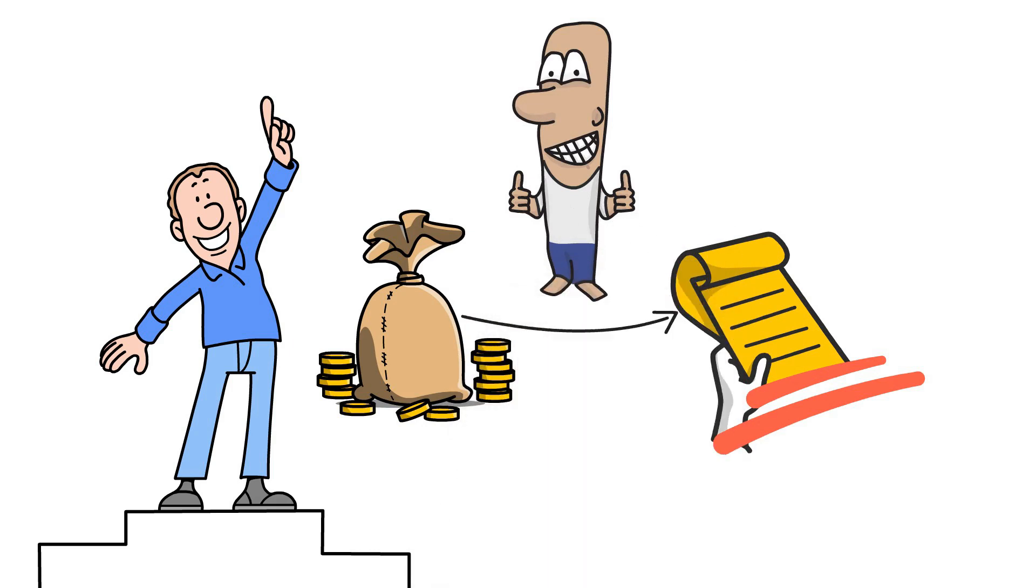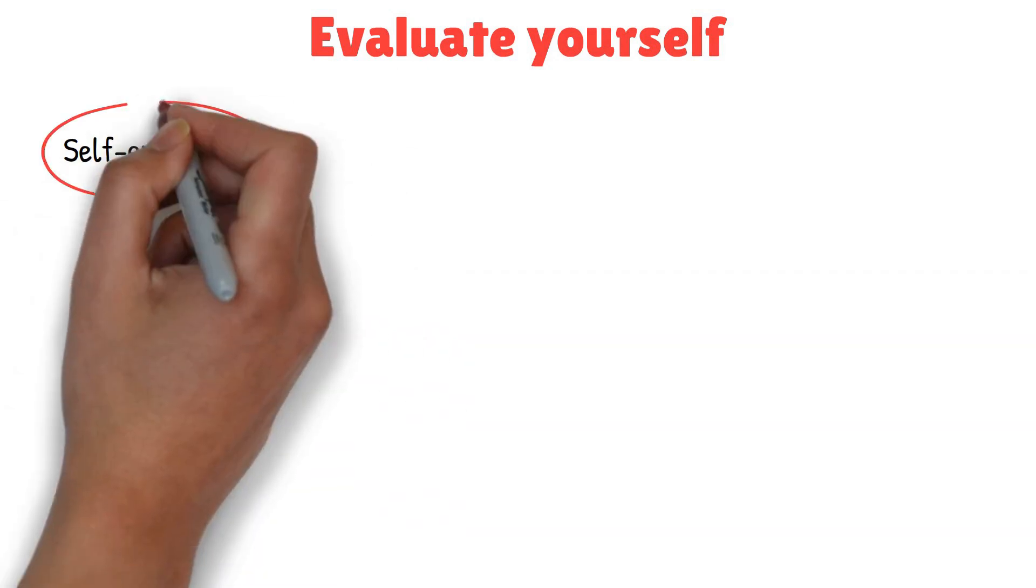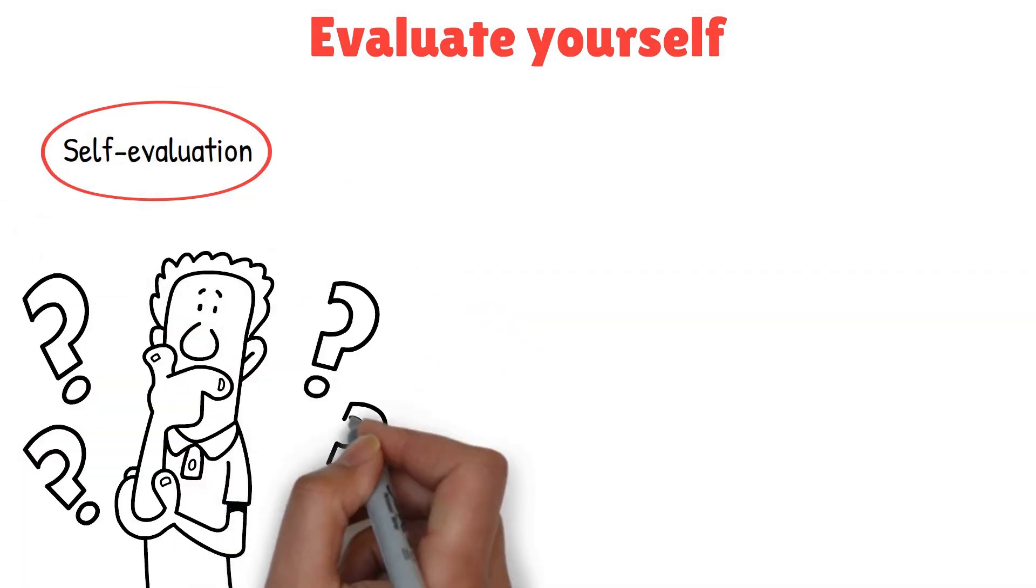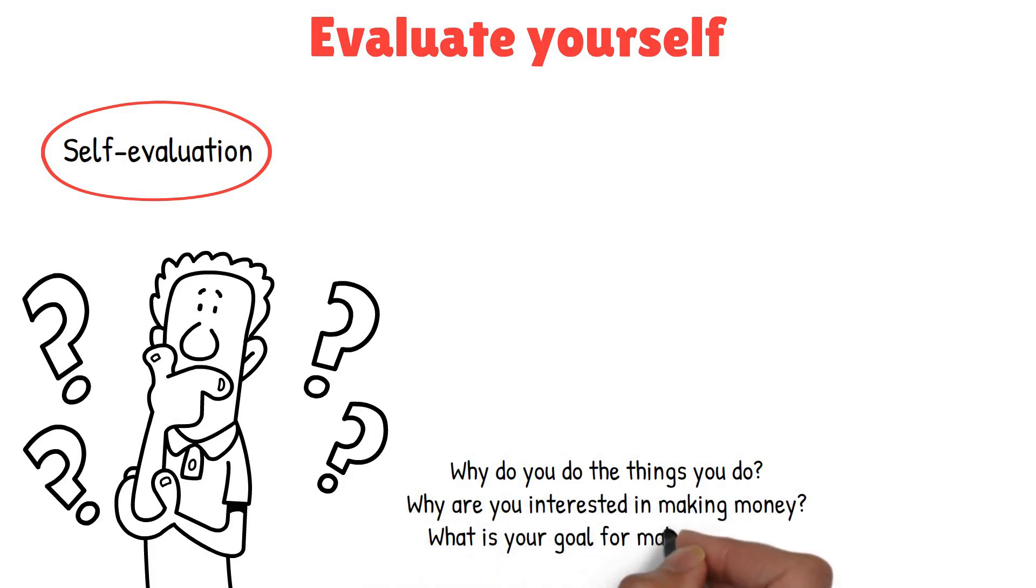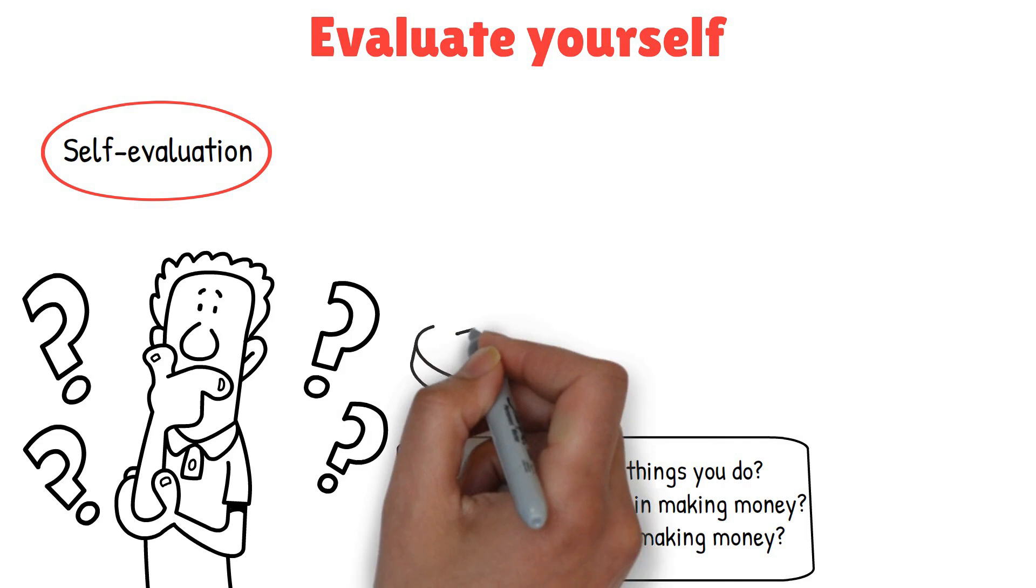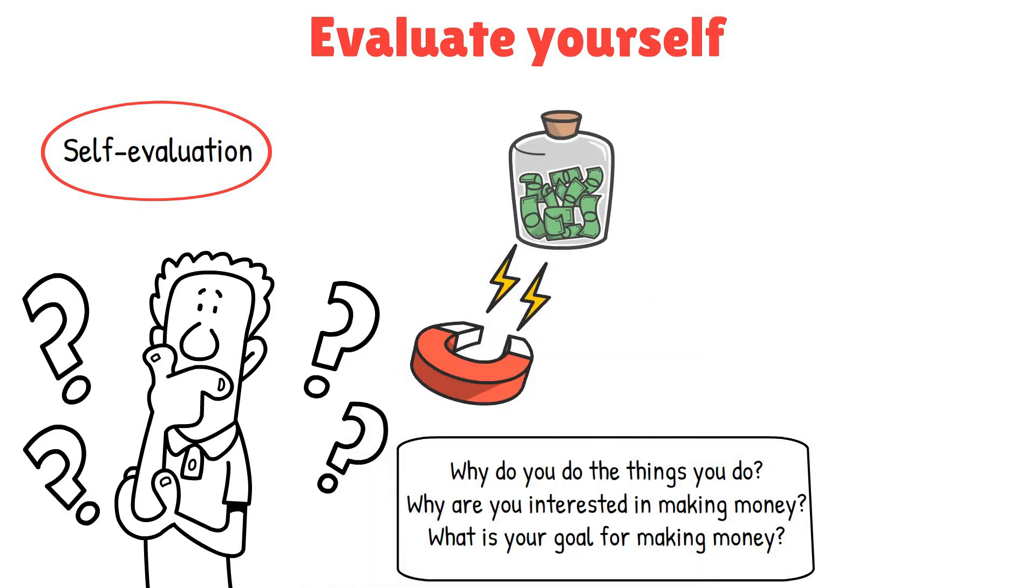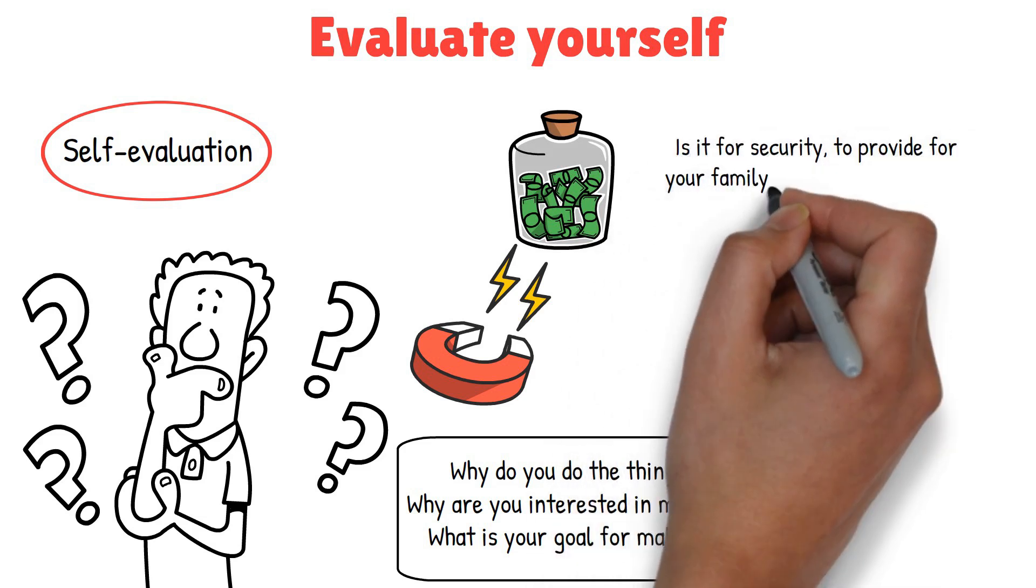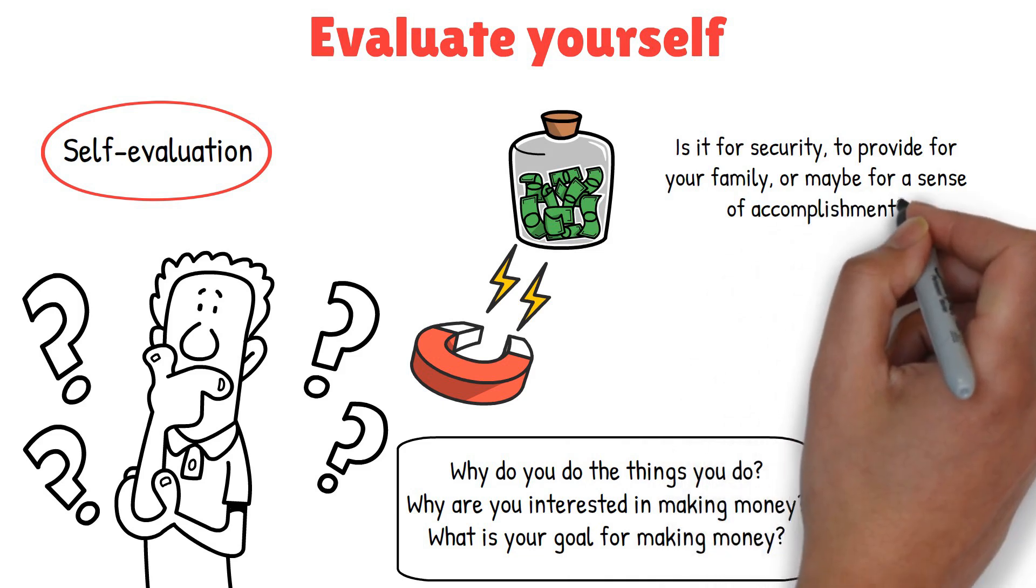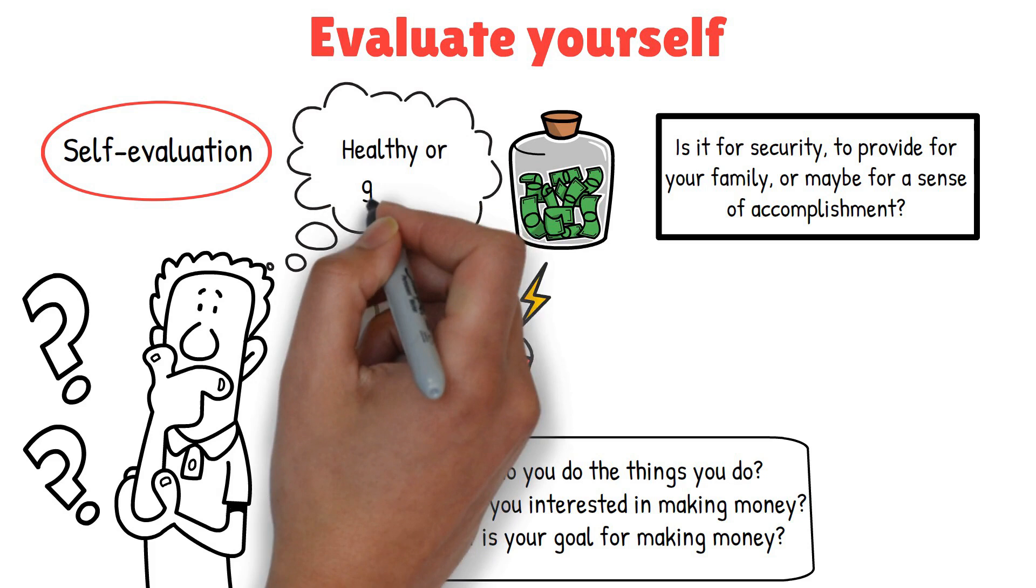Alright, the next thing you need to do to murder your greed and achieve true contentment is to evaluate yourself. Self-evaluation is a crucial step. It's about sitting down and asking yourself some tough questions. Why do you do the things you do? Why are you interested in making money? What is your goal for making money? These questions can reveal a lot about your true motivations and desires. Take some time to really think about these questions. Why are you driven to make more money? Is it for security, to provide for your family, or maybe for a sense of accomplishment? Understanding your true reasons can help you determine whether your desire for money is healthy, or if it's fueled by greed.